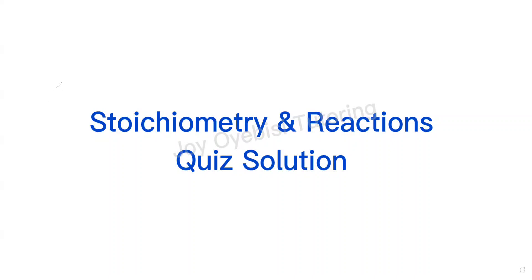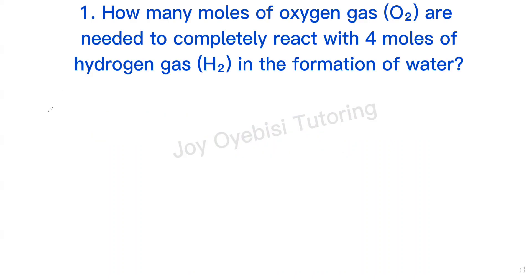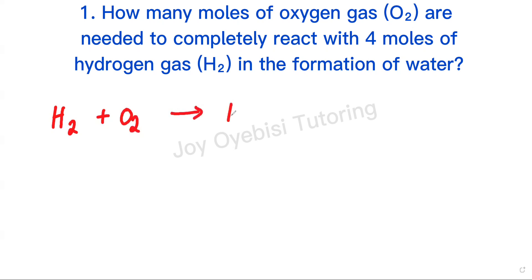Stoichiometry and reaction quiz solution. Question 1: How many moles of oxygen gas are needed to completely react with 4 moles of hydrogen gas in the formation of water? The first thing we do is write out the chemical equation: H2 plus O2 gives us H2O.